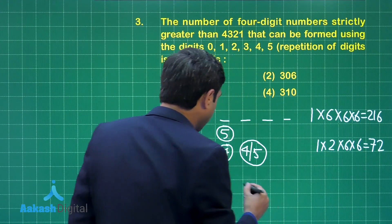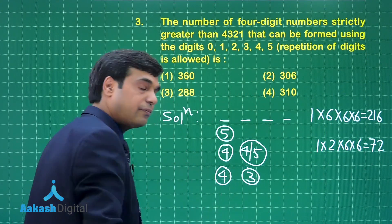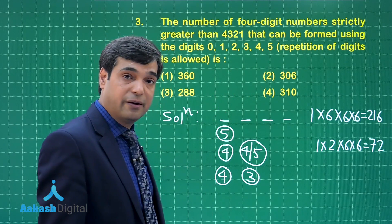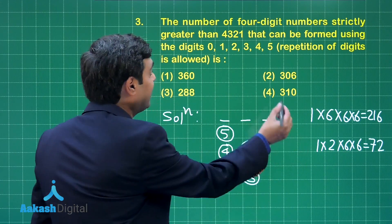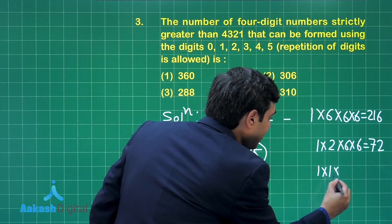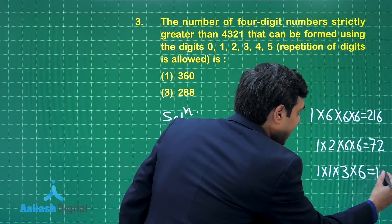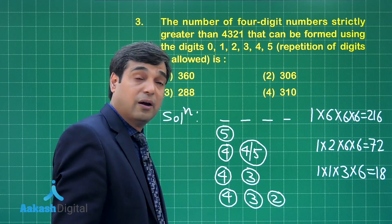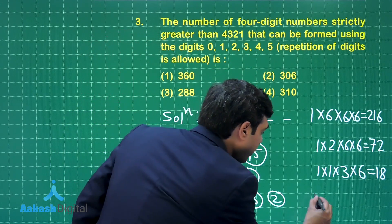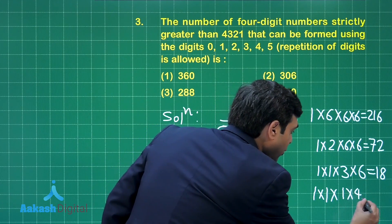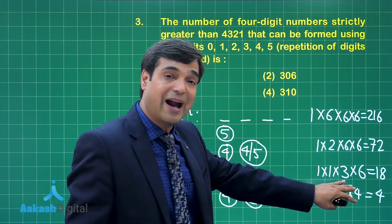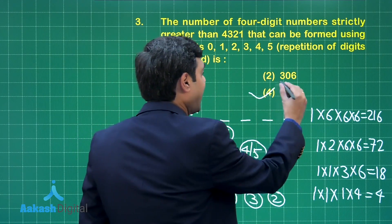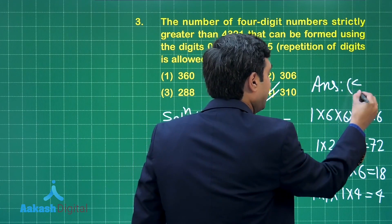When the first digit is 4 and the second digit is 3, if the third digit is 3, 4, or 5, the number is always greater than 4321 — that gives 1 times 1 times 3 times 6 equals 18 cases. When it's 4, 3, 2 in the first three places, the last digit can be any of 4 values (2, 3, 4, 5), giving 1 times 1 times 1 times 4 equals 4 cases. Adding all: 216 plus 72 plus 18 plus 4 equals 310. The correct answer is option number 4.